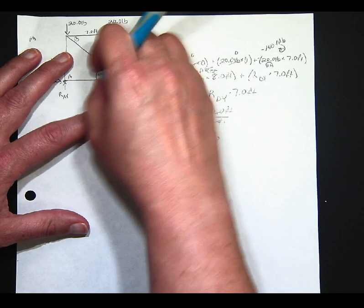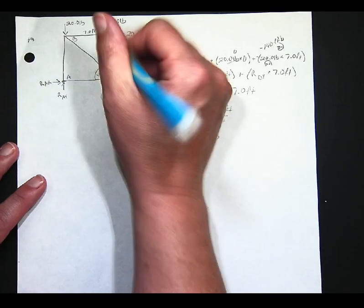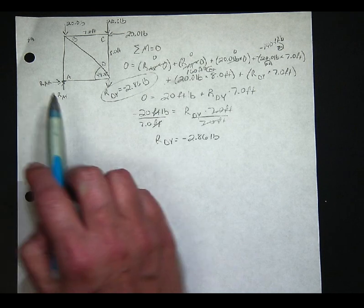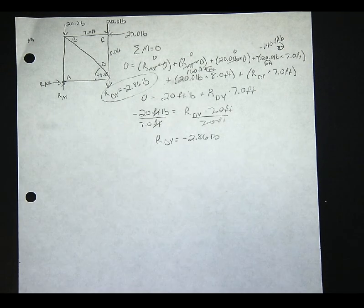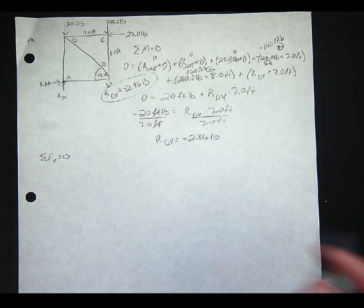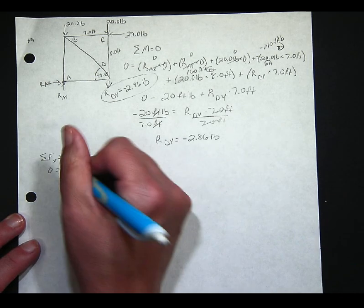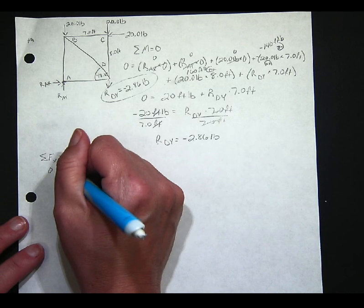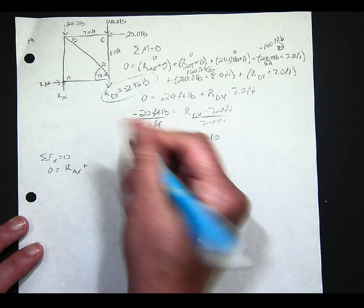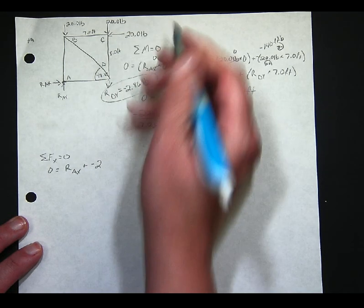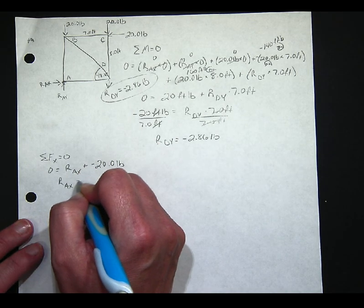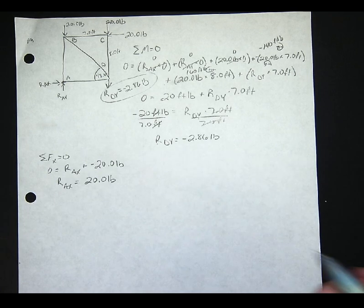Notice that my arrow is incorrect — it's actually going down because it's negative. Next I need to solve for RAX. The sum of all my forces in X must equal zero. Looking at all my X forces: RAX plus a negative 20.0 pounds — going to the left — so RAX equals 20.0 pounds.